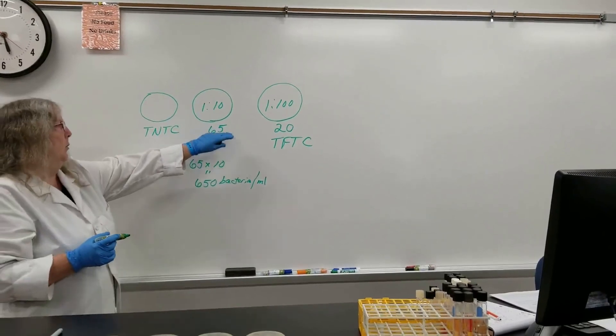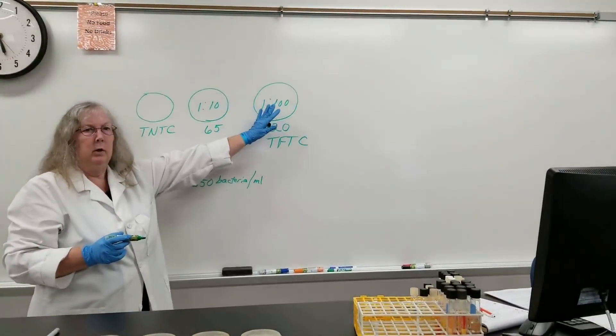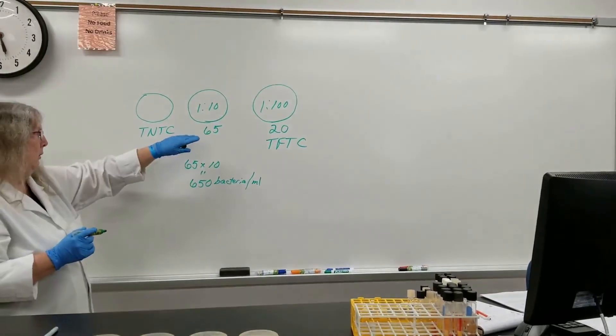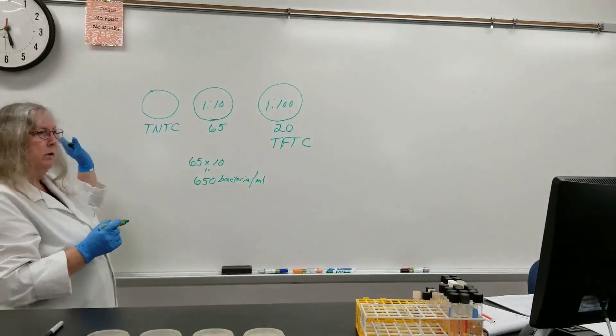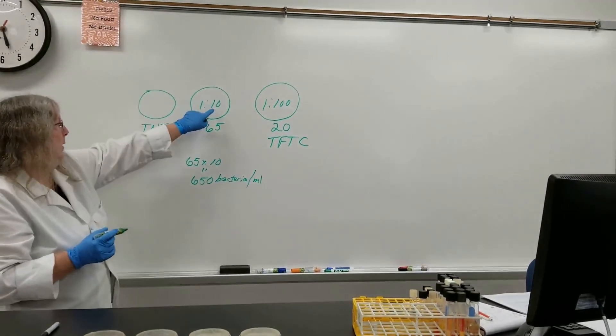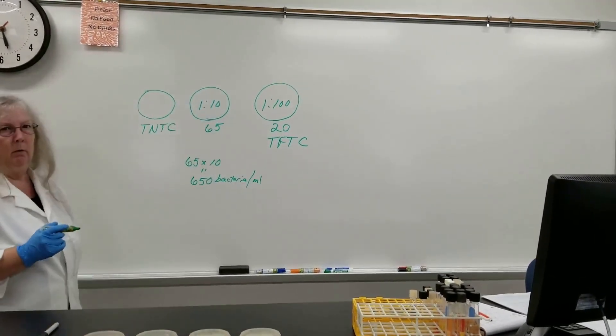Just multiply the number. Do you use the 20 here? No, don't look at that. That's less than 30. Do you use numbers here? No, it's greater than 300. You just pick that one number. I don't care if there's 6 plates here. Just pick the one that's between 30 and 300 and then just multiply it by this number here.